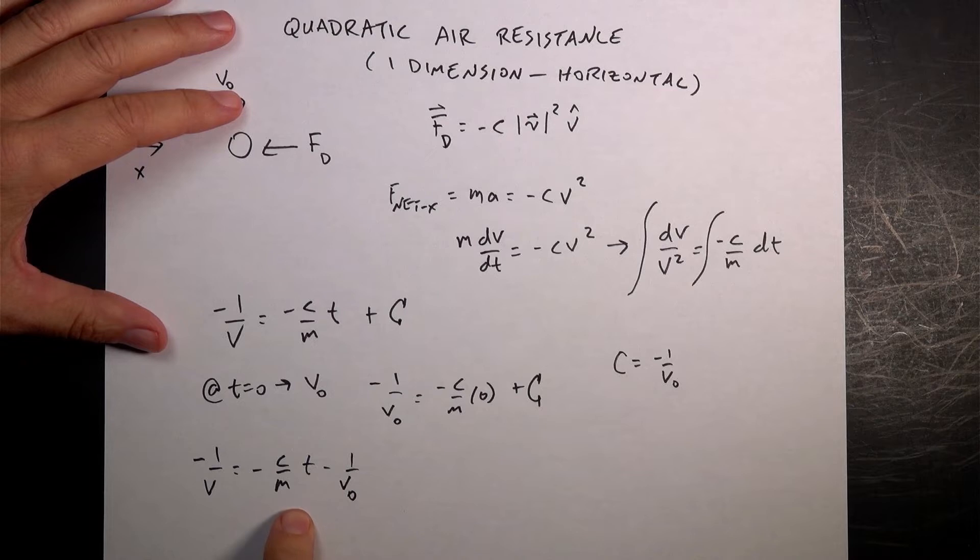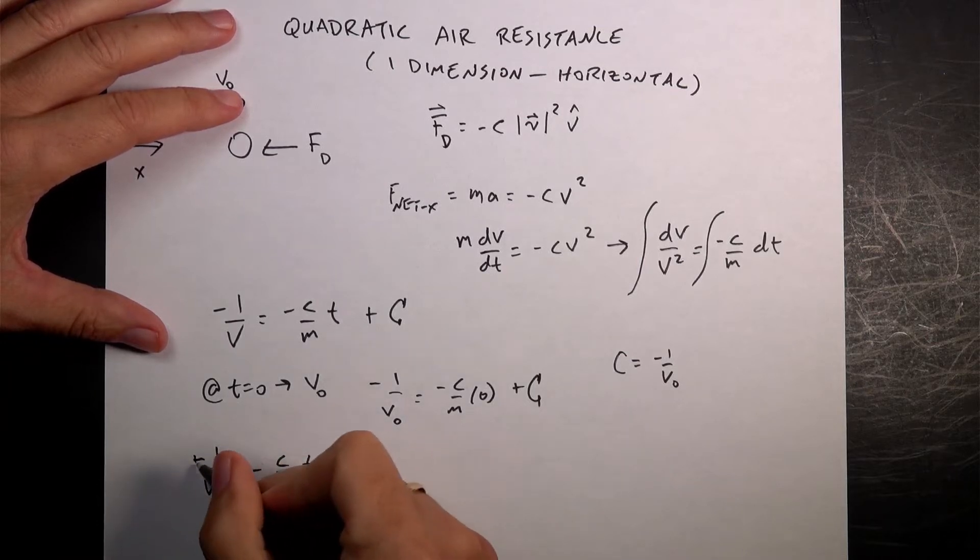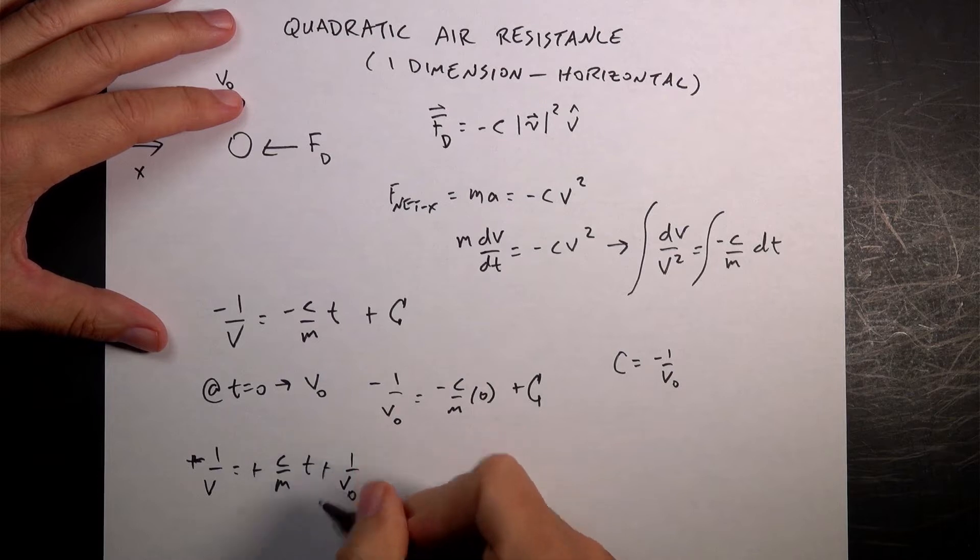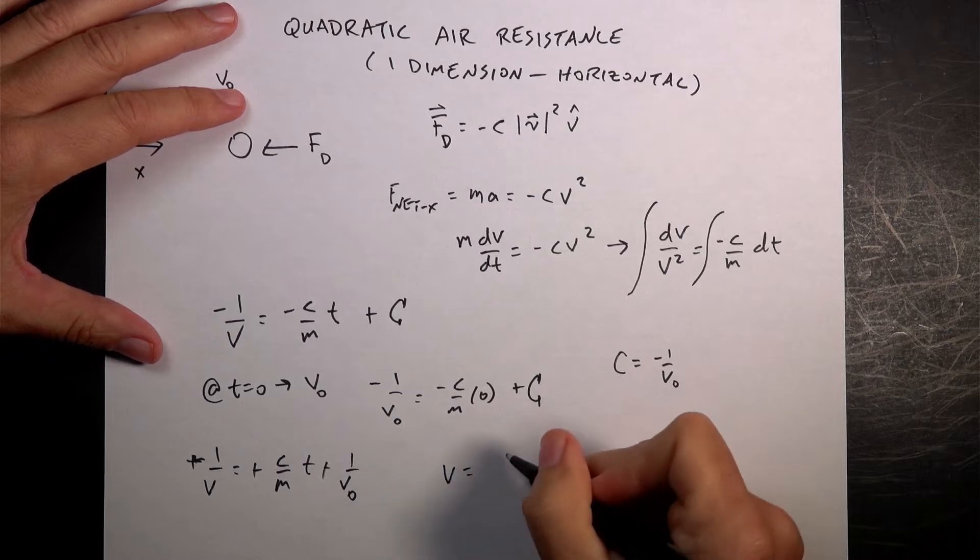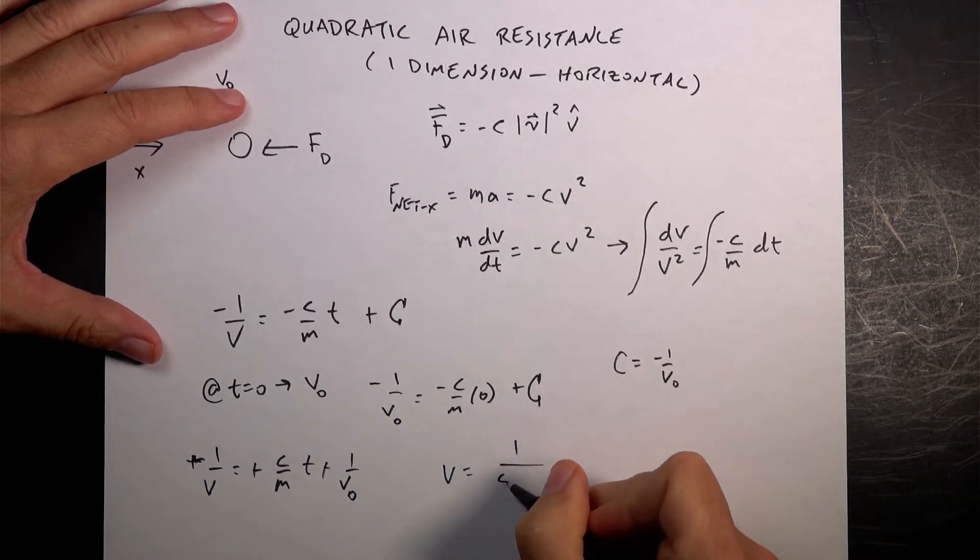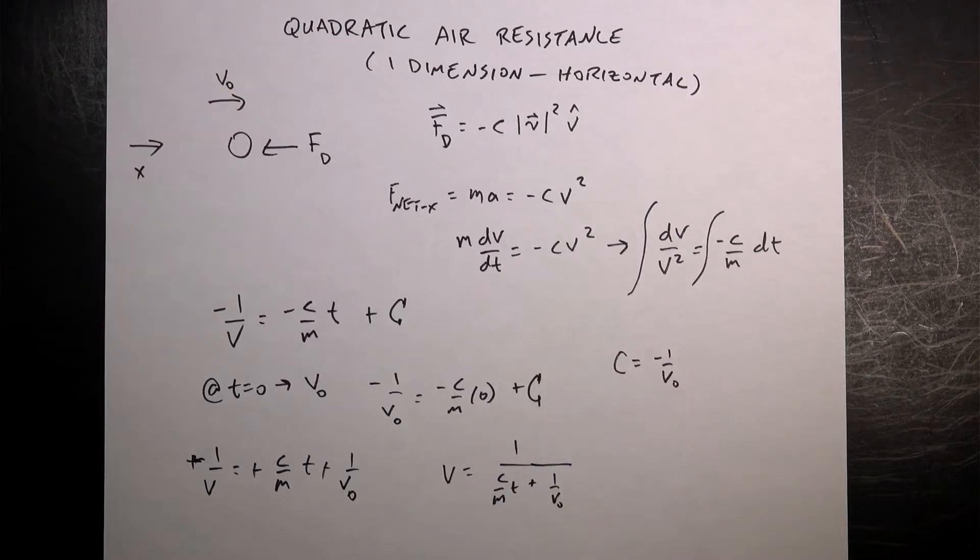So I want to solve for v, right? So the first thing I can do is to multiply everything by a negative 1, and that's that. And then I'm just going to take the inverse of both sides, and I have it. v is going to be 1 over c over m t plus 1 over v0. That's my velocity as a function of time.